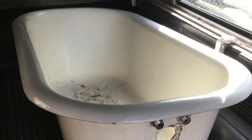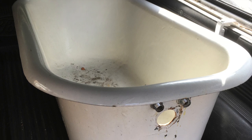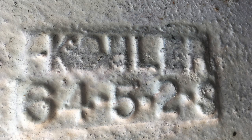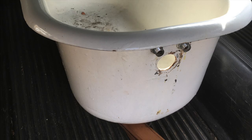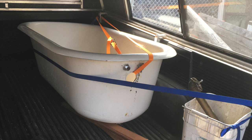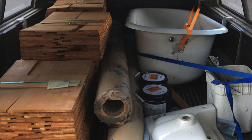We always knew we wanted a clawfoot tub upstairs, and we found this circa 1920 Kohler tub at the architectural salvage place in Seattle. The main thing I was looking for was something less than $500 that was five feet long and did not have any major damage on the interior of the tub. I planned to refinish the tub, so it didn't matter what the outside looked like.